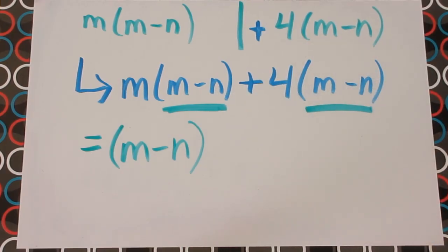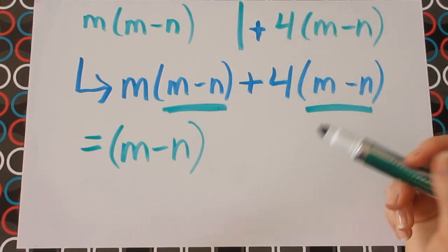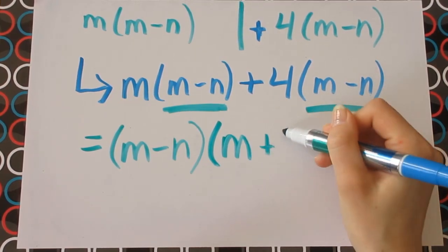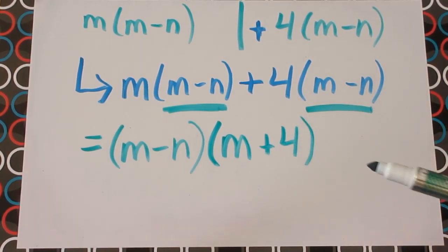And with the m minus n being a common factor between the two terms, we just write the remaining terms, which are m plus 4, and this is your final answer.